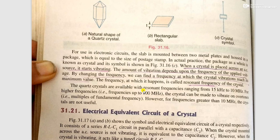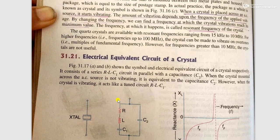The maximum frequency of the crystal is also called resonant frequency. Quartz crystals are available with resonant frequencies which range from 15 kHz to 10 MHz. For higher frequencies larger than 10 MHz, up to 100 MHz, the crystal can be made to vibrate on overtones, that is multiples of fundamental frequencies.